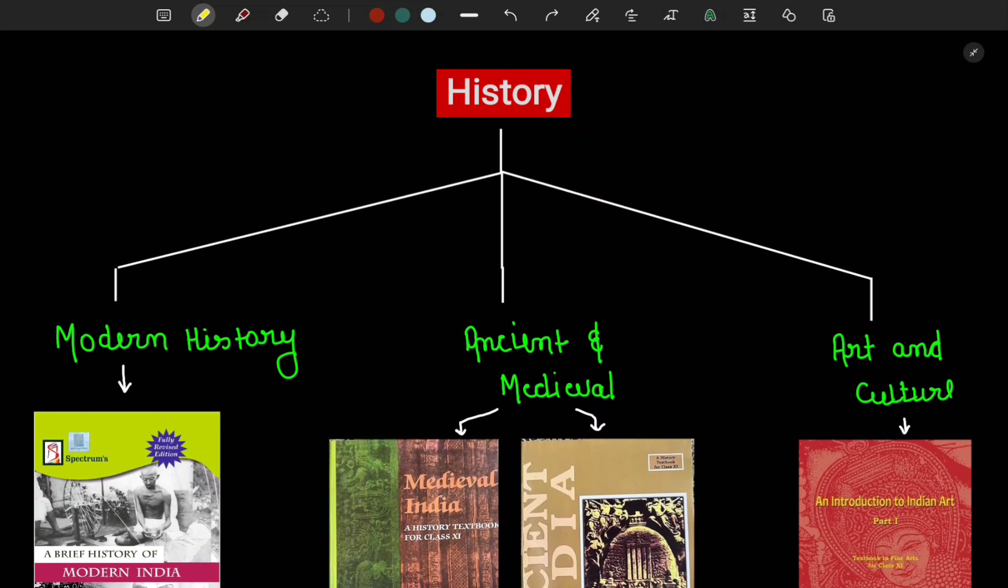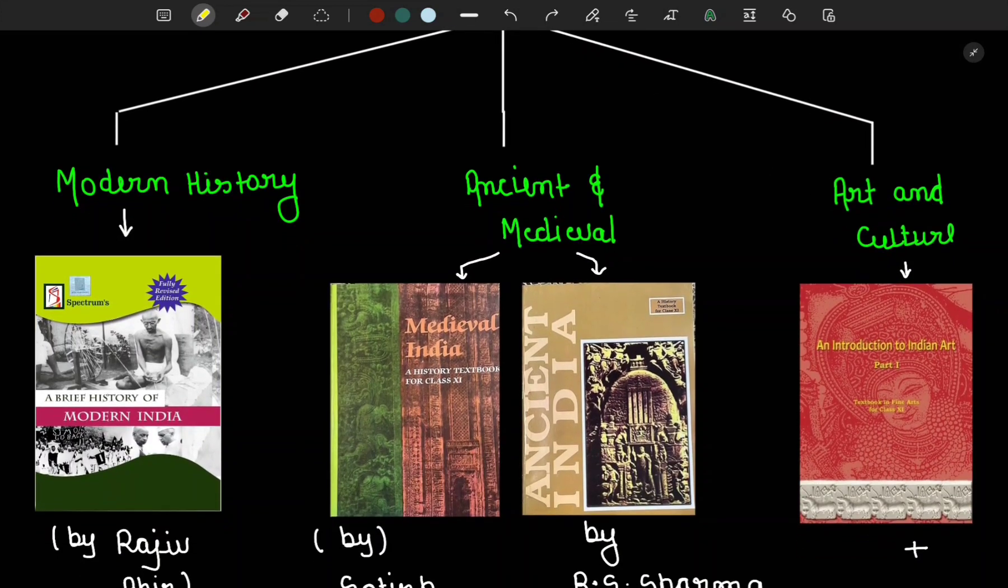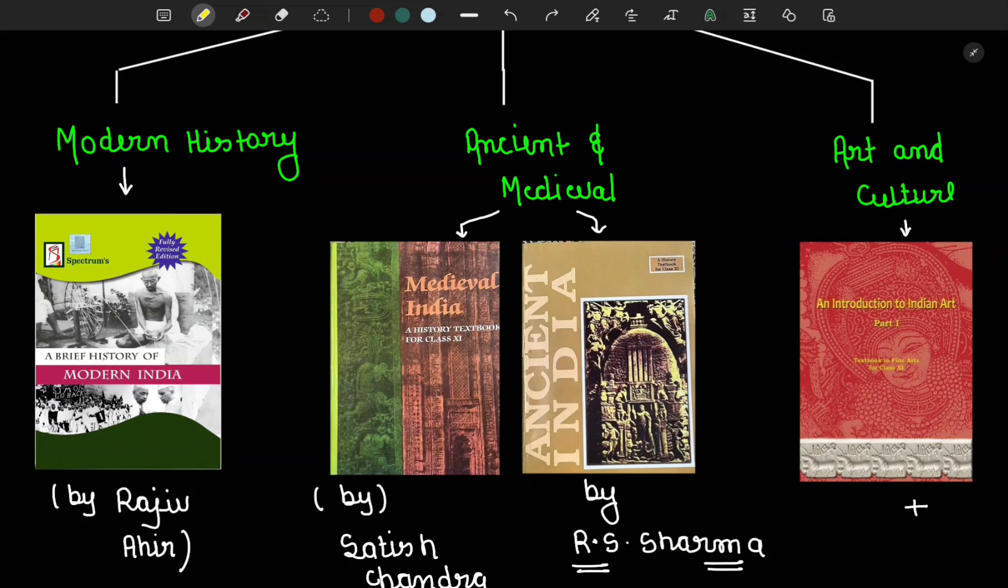First, let's see what we follow in history resources for modern, medieval, ancient and art and culture. In modern history, we're going to follow Spectrum by Rajiv Wahir. This is the only single resource we follow in modern history. Some people also follow Vipin Chandra, but I suggest Spectrum is much better because it is in notes form and relatively easy to remember.